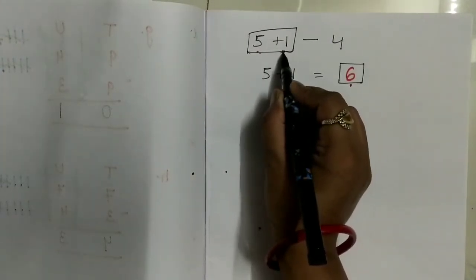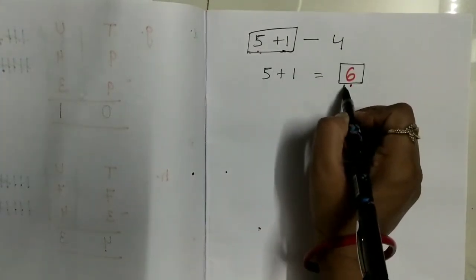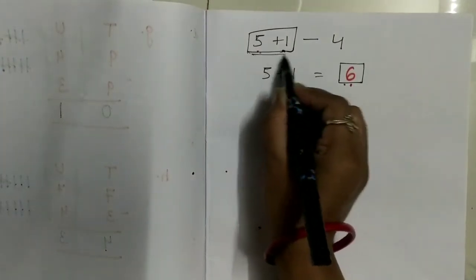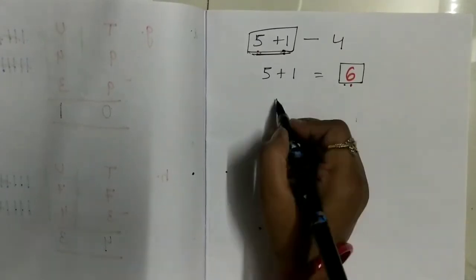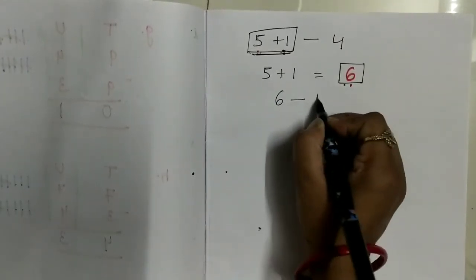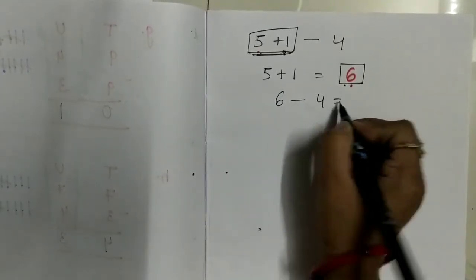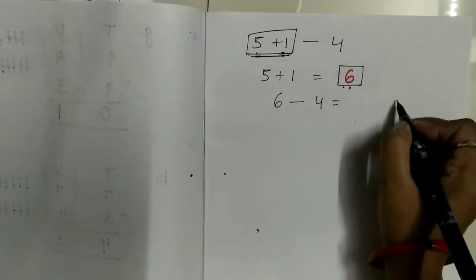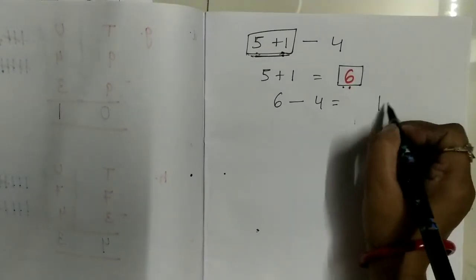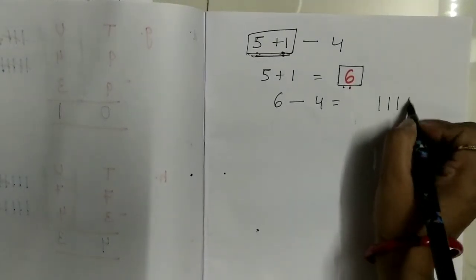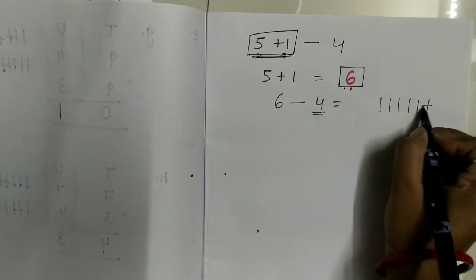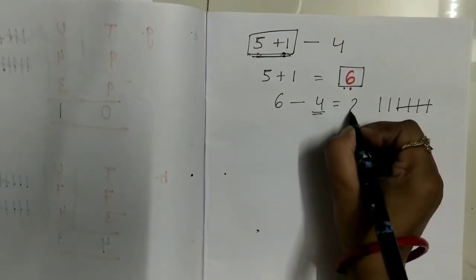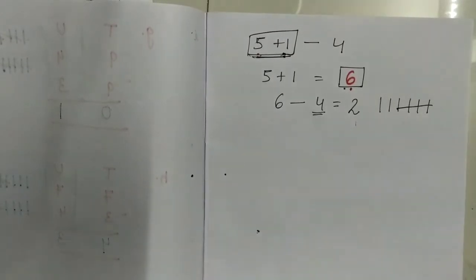When you solve 5 plus 1 equals 6, at the place of 5 plus 1, you have to write 6 minus 4 equals what. Draw 6 lines: 1, 2, 3, 4, 5, 6. Cut 4 lines: 1, 2, 3, 4. How many lines are remaining? 2.